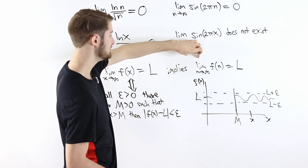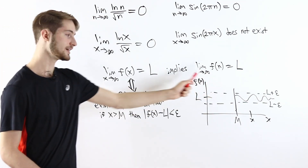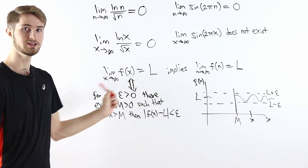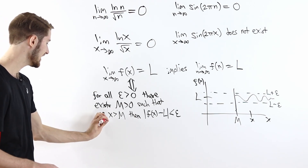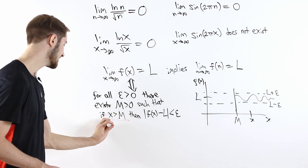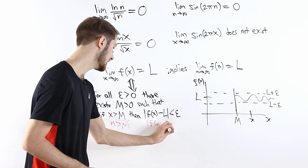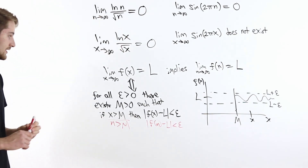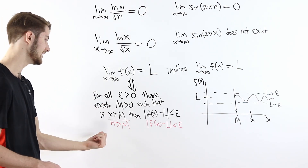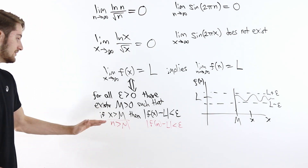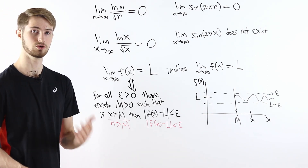What does it mean for the limit as n goes to infinity of f(n) to equal L? The definition is almost identical to the case where x goes to infinity. The only difference is that instead of looking at x greater than M, we're looking at N greater than M, where N is an integer. And in this inequality, we have the distance from f(N) to L being less than epsilon. The difference between x and N is that we only allow N to be an integer, whereas x can be any real number.